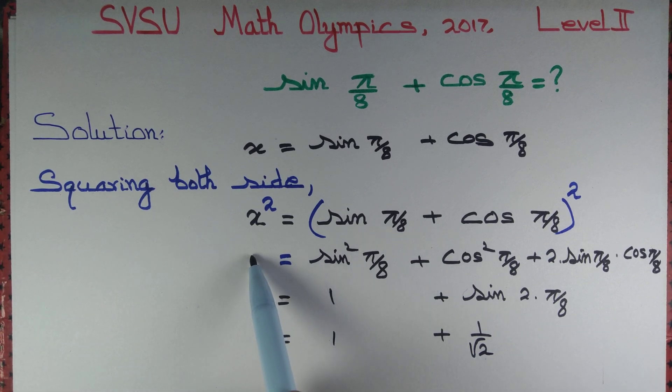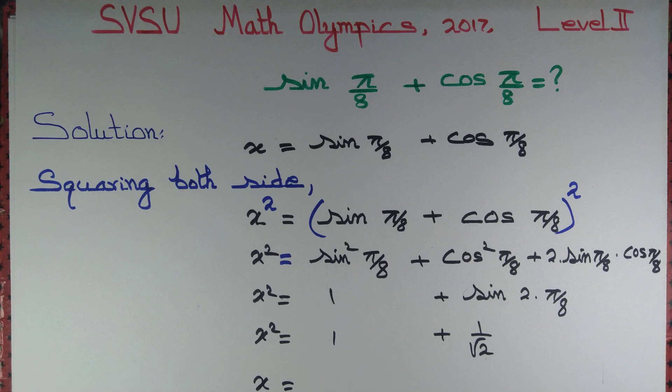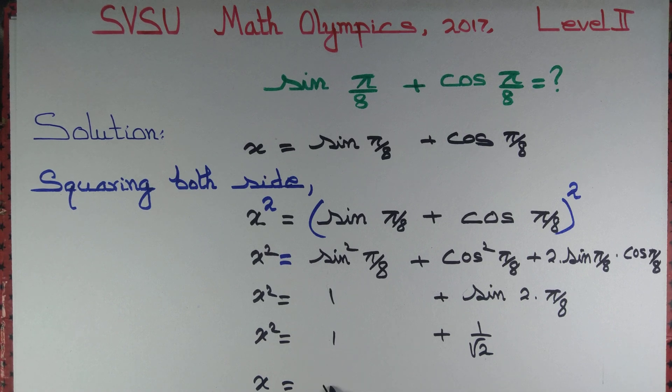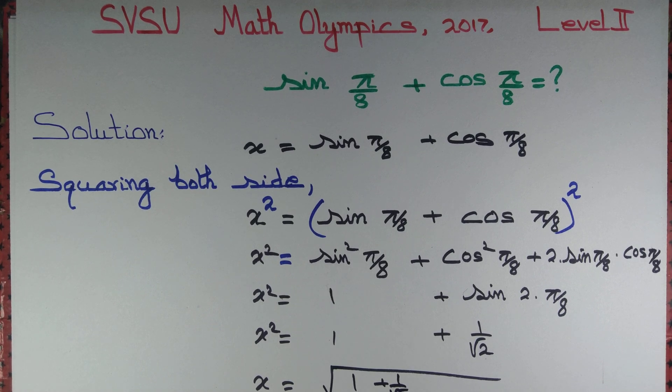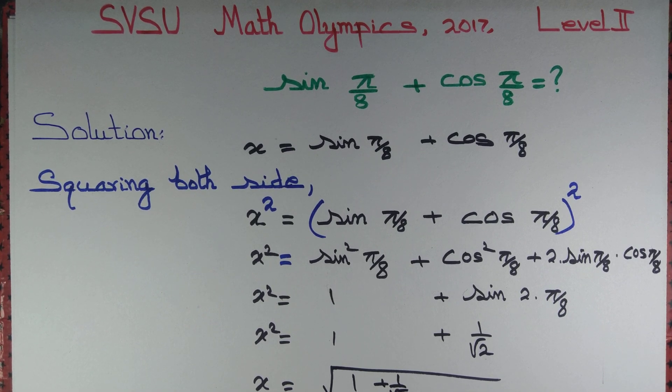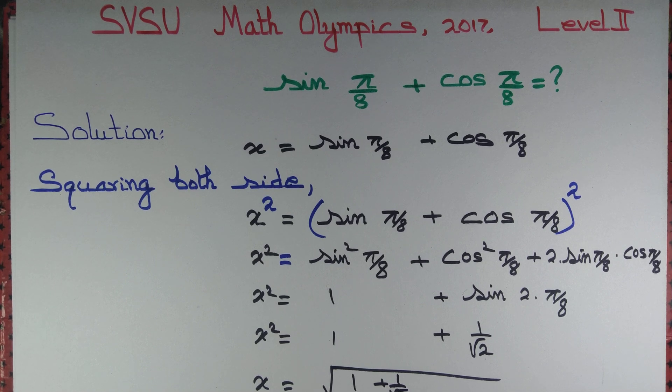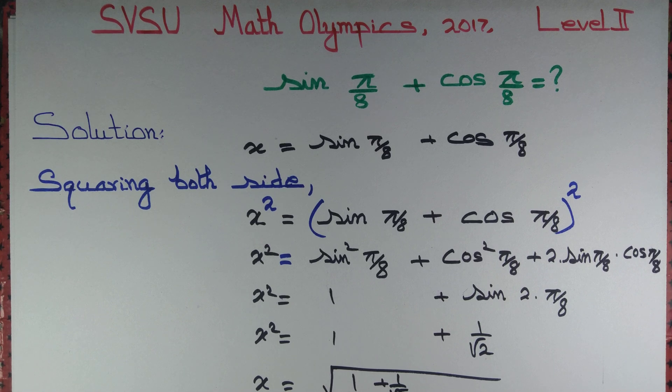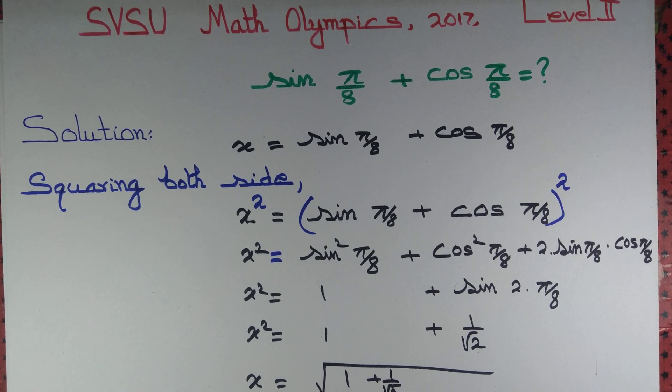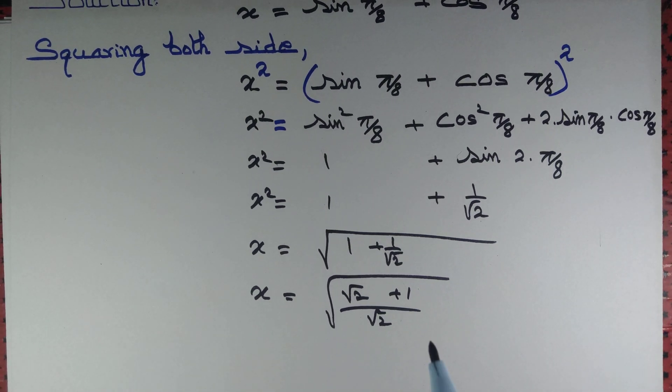So we got x² to be a simple expression. That's in fact equal to 1 plus root 2. Can we determine x? Of course, yes. That's equal to square root of 1 plus 1 by root 2, which we can simplify a bit and write root 2 plus 1 by root 2 under the square root. So x equals square root of root 2 plus 1 by root 2.